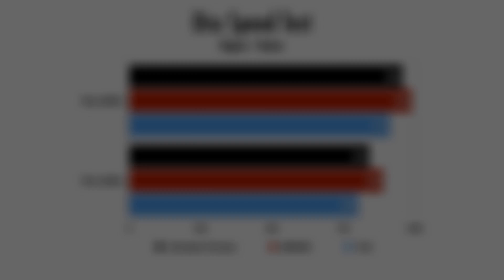Now the disk speed test — I fall right in the middle between the 8-core and 6-core. Marques scored 990 on reads and 890 on writes. I was at 959 reads and 843 writes. TLD had 915 on reads and 803 on writes. Keep in mind mine is not a PCIe SSD — it's two SSDs in RAID 0. Either way, all setups are ridiculously fast and you won't have any issues there.